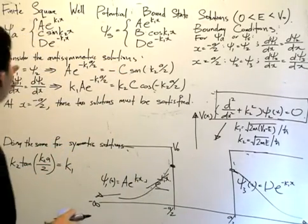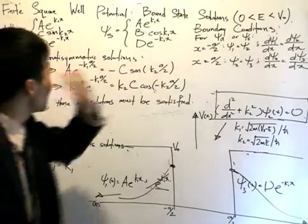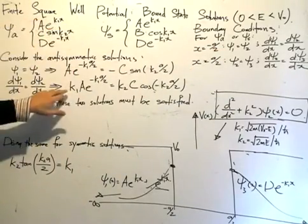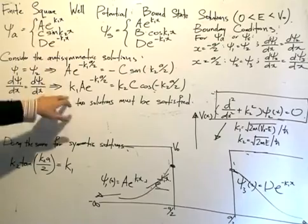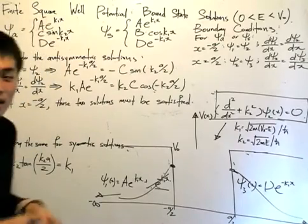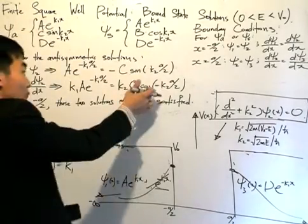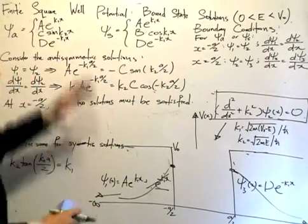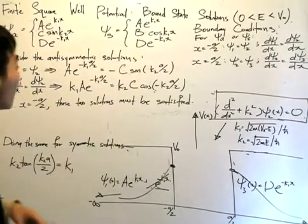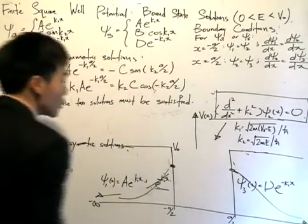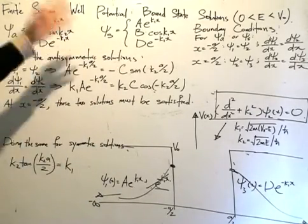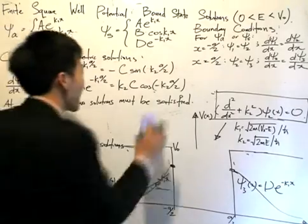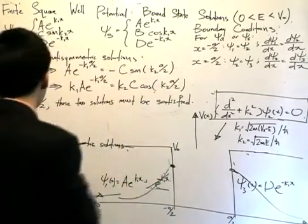I also differentiate both psi_1 and psi_2. Differentiating brings k1 outside, and since it's a sine function I get a cosine function after differentiation. Substituting x equals minus a/2, and knowing that cosine is an even function, I can absorb the minus sign. So applying the boundary conditions at x equals minus a/2 for the anti-symmetric solutions, I get expressions involving both the sine and cosine functions.